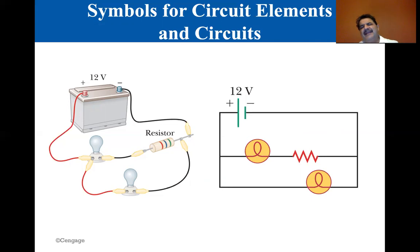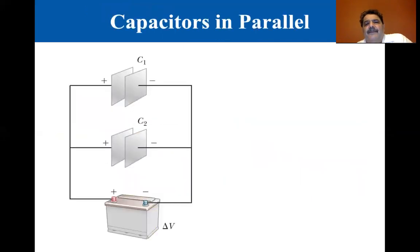You can see that the light bulb in the middle branch—the light bulb and the resistor in series—and the single light bulb beside it is in parallel with that. They're all in parallel with the battery. Now we're going to talk about combinations of capacitors in the next section.